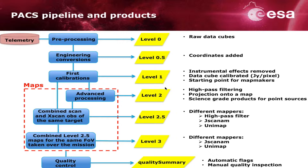Arriving at Level 1, we have fully calibrated data — calibrated in terms of removal of instrumental effects, and calibrated in terms of brightness, since the data at this level are in Janskys per pixel. Also, the coordinates of each pixel are assigned. This is the starting point for the map makers.